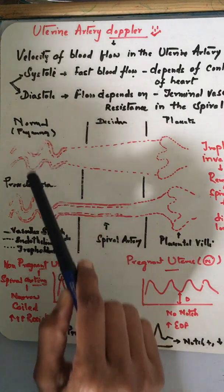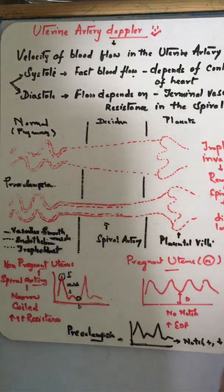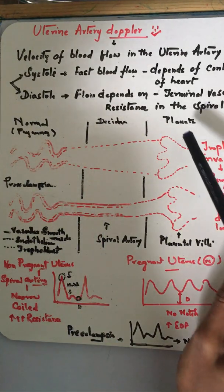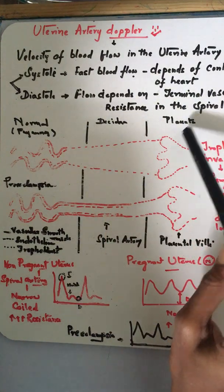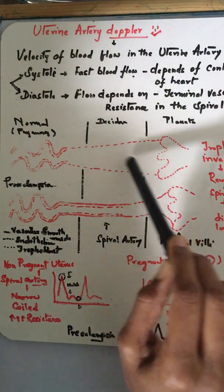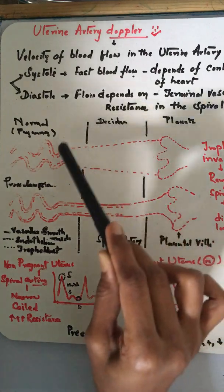What happens to the spiral arteries during pregnancy and preeclampsia? During pregnancy, there is a placenta within the myometrium. Trophoblasts from this placenta go retrograde within the spiral arteries and cause remodeling of the spiral arteries.